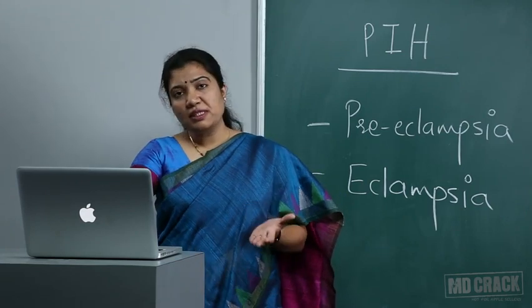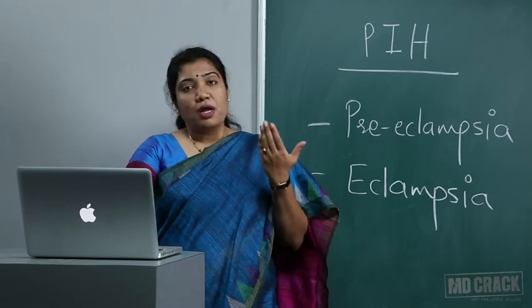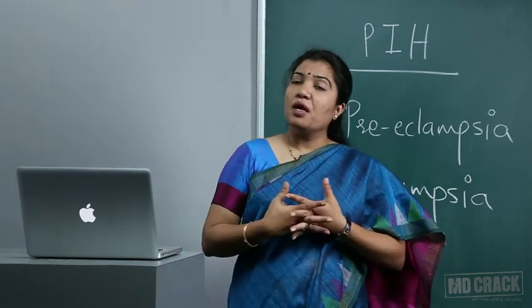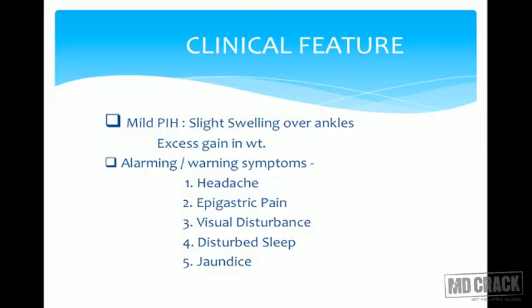Warning symptoms before a patient converts to eclampsia include: headache, epigastric pain, visual disturbances like blurring, disturbed sleep, and jaundice. If a patient reports headache, nausea, vomiting, epigastric pain, or blurring, always consider that she may be heading toward eclampsia. On examination, exaggerated deep tendon reflexes are a sign that she may worsen.